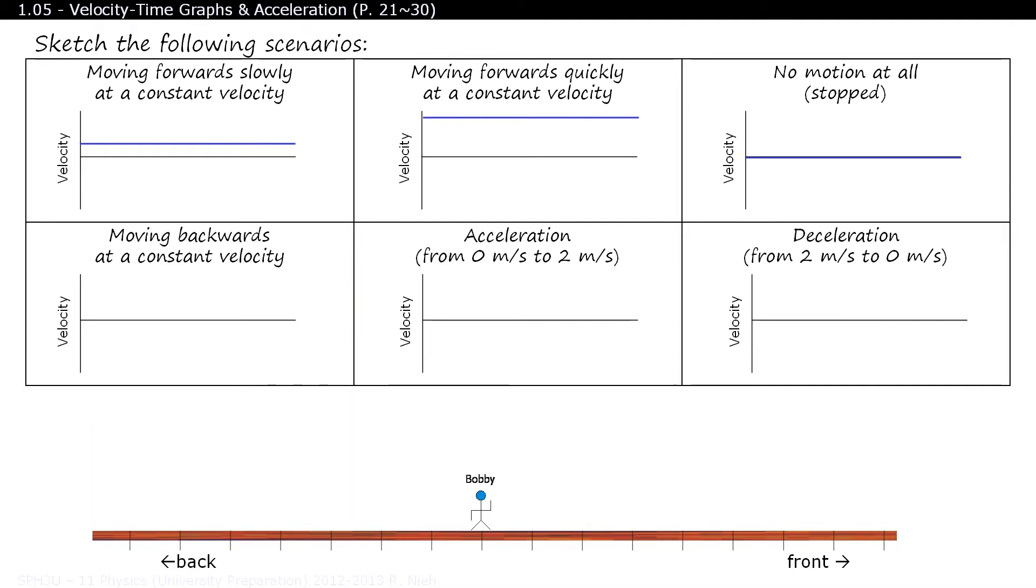Hey Bobby, this time can you walk backwards for me? The plot is still horizontal as Bobby is still experiencing uniform motion, but the y-intercept is negative because Bobby is walking backwards.